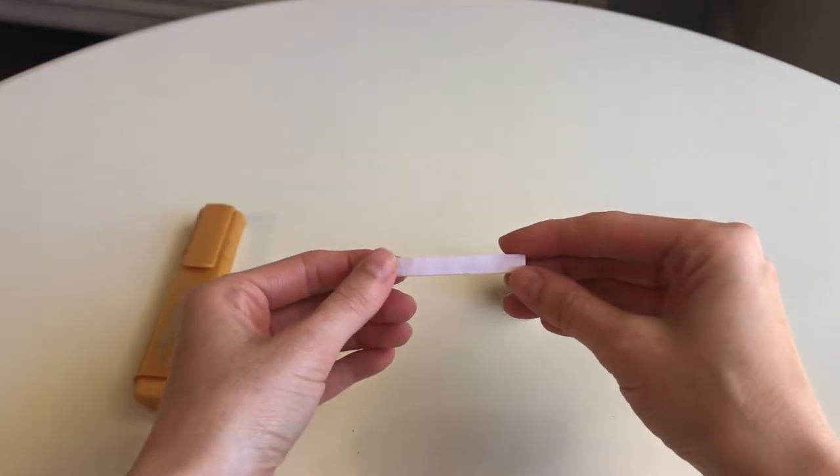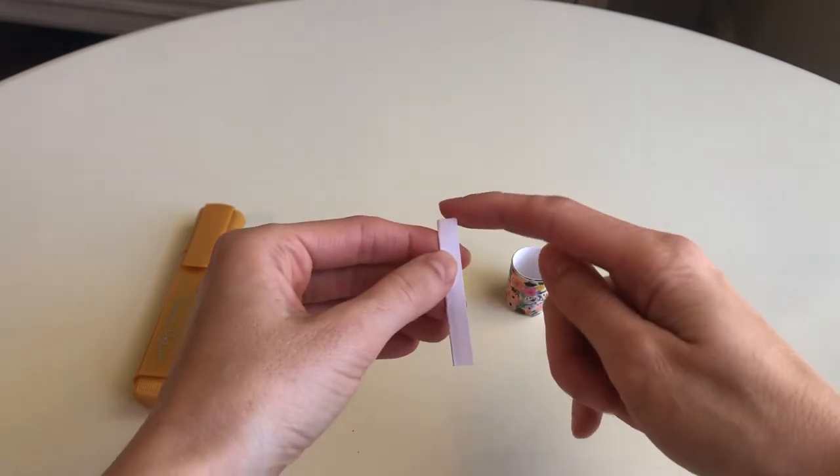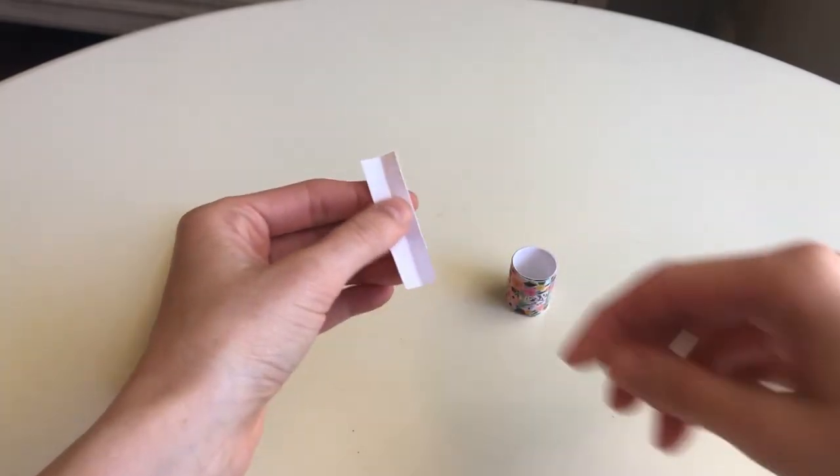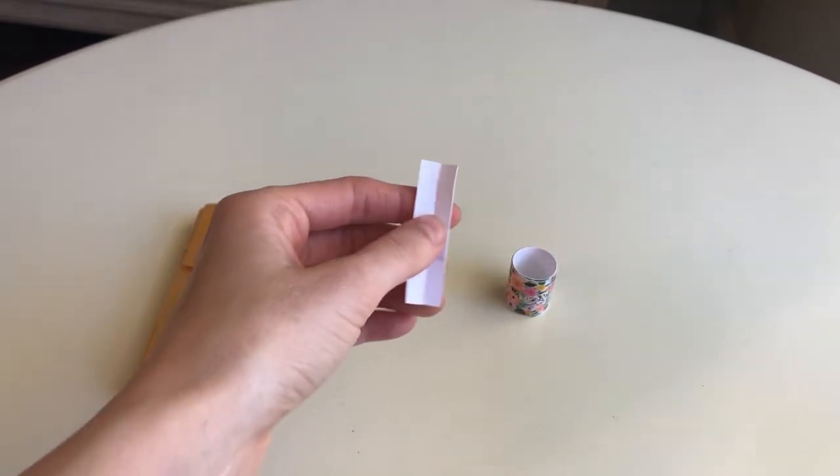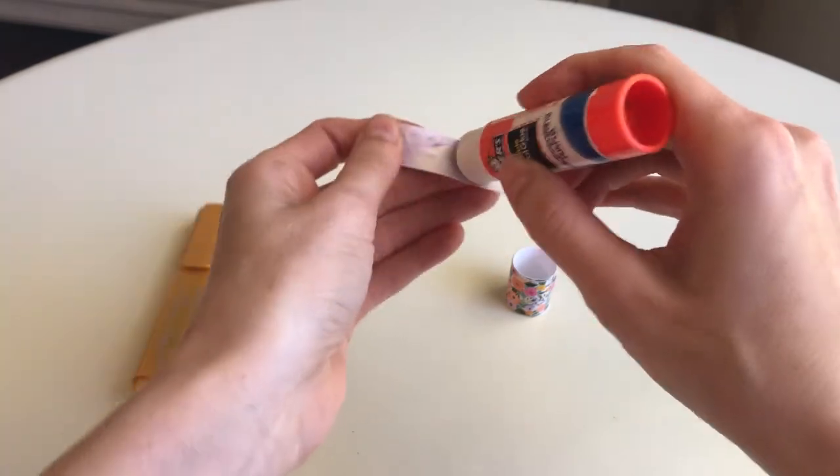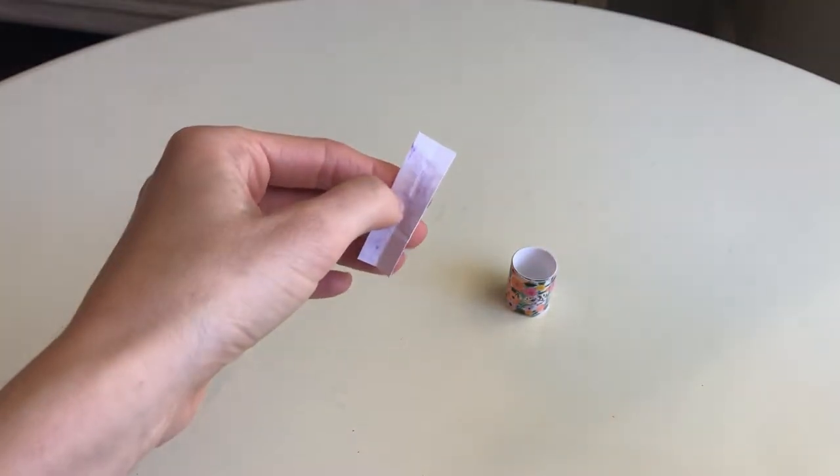For the handle you're going to take a scrap piece of paper and cut it to an inch and a half to about two inches. And I doubled mine to have it more sturdy. So I'm going to glue it together and then I'm going to grab my gold marker or sharpie and color the whole other side gold.